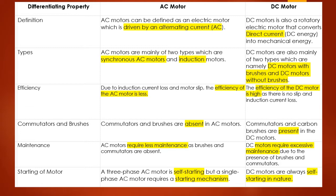I hope you've now understood what a DC motor is, its different components, and its working principle from that video. Now we'll look at another important part of the chapter: the difference between AC motors and DC motors. This type of question can be expected in the examination — they may ask you to highlight at least five to ten differences — as short answer, long answer, objective, true/false, or match-the-following type questions. This is very important to understand.